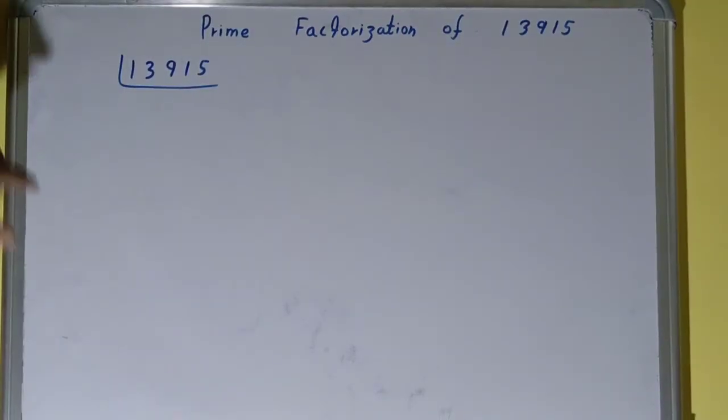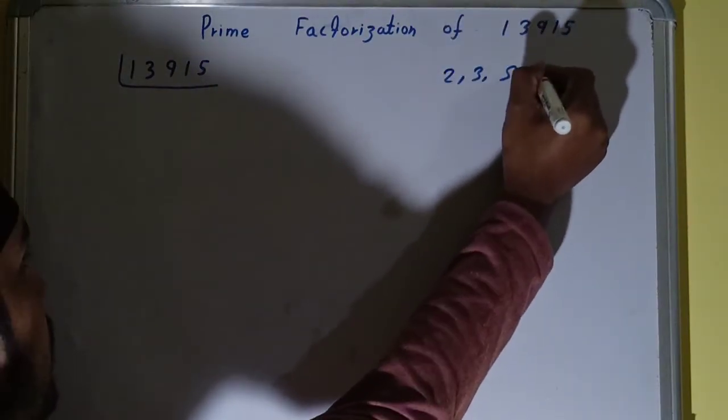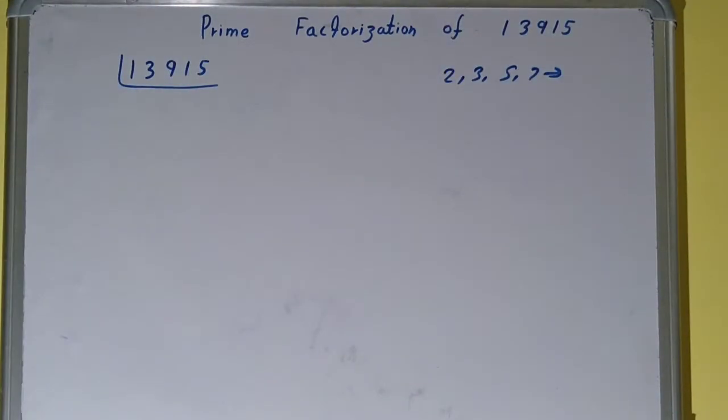Before solving this, you should have an idea about what prime numbers are. Prime numbers are numbers that are divisible by one and the number itself, like 2, 3, 5, 7, and so on.